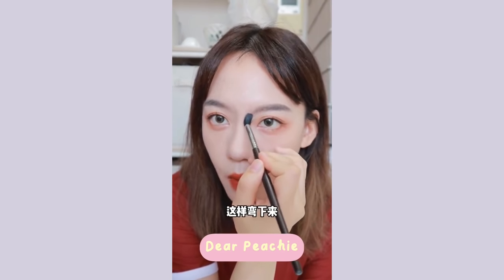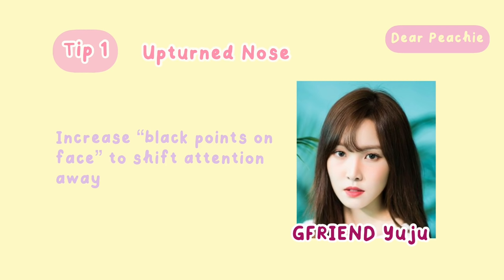We have shown you the ways to sculpt your nose, but there are other things you can do to further enhance the visual impression of your nose. For those who have an upturned nose, you can increase the black points on your face to help shift attention away from your nose — creating shadows and highlight doesn't really solve the visibility of nostrils. For example, wearing circle lenses increases the visibility of your pupils, diverting attention from your nose.